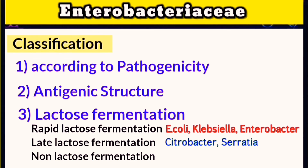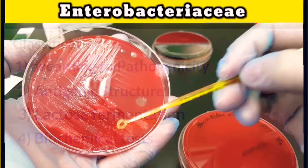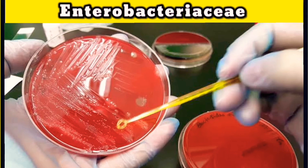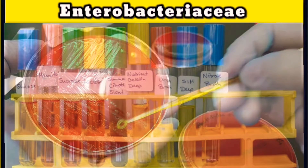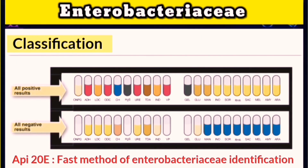Enterobacteriaceae that cannot ferment lactose, such as Salmonella, Shigella, and Proteus, are referred to as non-lactose fermenters. Biochemical tests can be used to both classify and identify Enterobacteriaceae, and may even confirm which species is being tested. These mainly include tests for indole, urease, hydrogen sulfide production, citrate, and motility. More rapid techniques such as API or VITEK can also be used for microorganism identification in the lab.